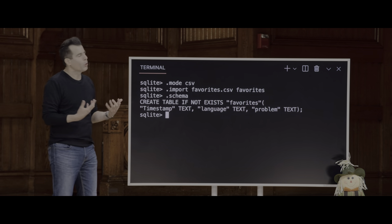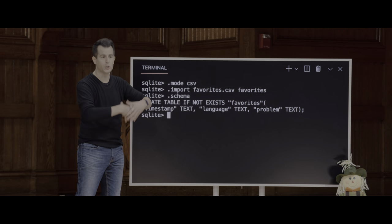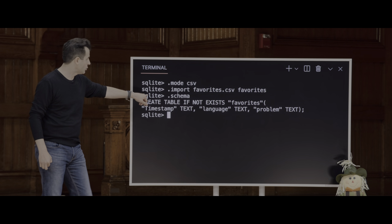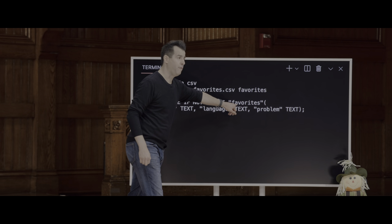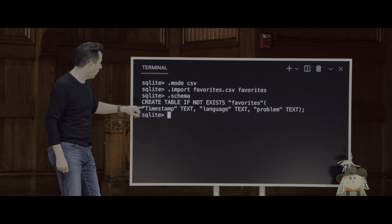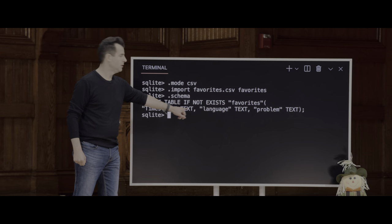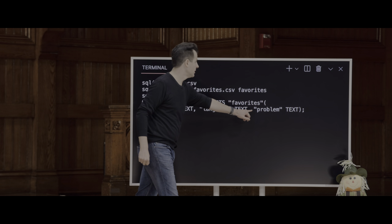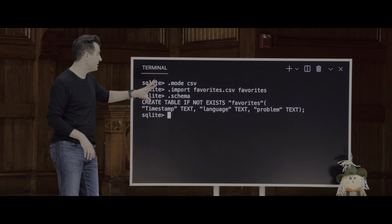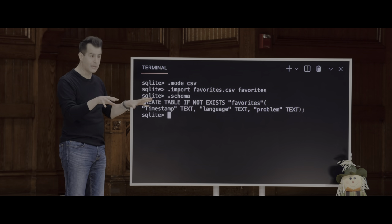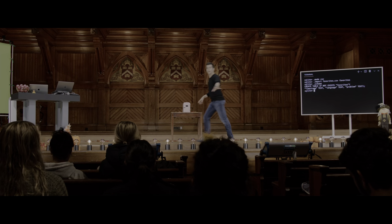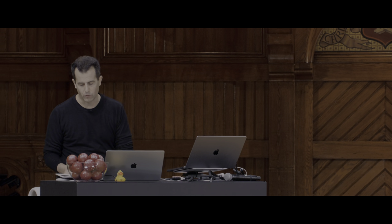That was just inferred trivially by the .import command to give me a three-column database table based on the Google form. These commands you run once to get up and running — you don't run them frequently. Now let's do something more interesting. I'll clear my SQLite terminal and use some of my first SQL commands. Among them: SELECT. This is maybe the most common, most useful, most powerful thing to use with a SQL database.